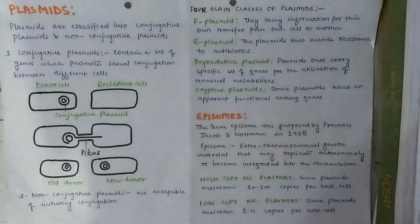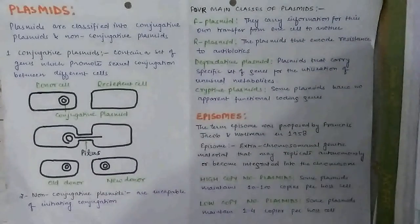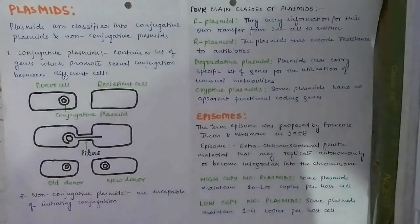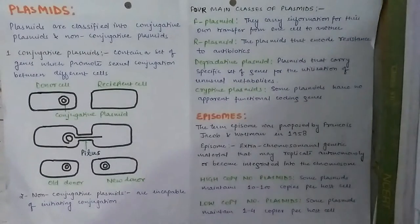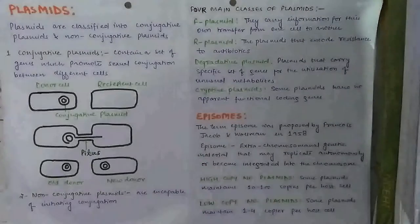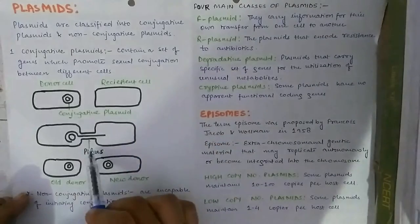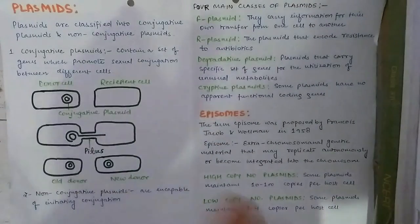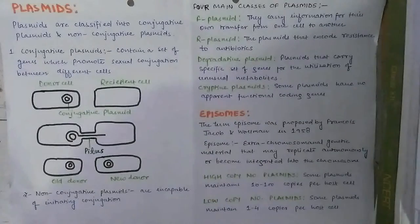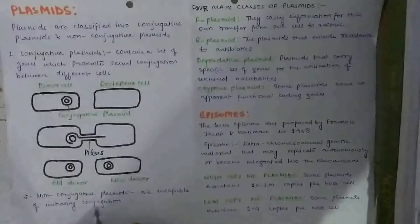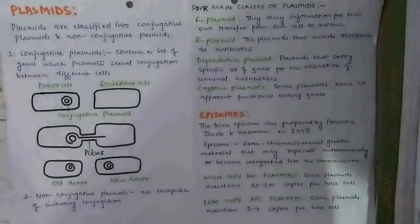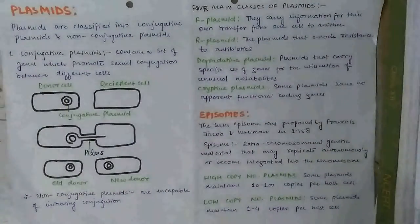Plasmids are classified into conjugated and non-conjugated plasmids. Conjugated plasmids contain a set of genes that promote sexual conjugation between different bacterial cells. Here, attachment of two bacterial cells — a donor cell and a recipient cell — takes place through pili. Non-conjugated plasmids are incapable of initiating conjugation.